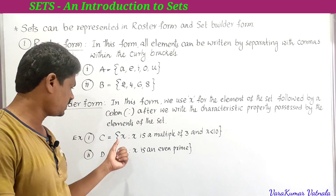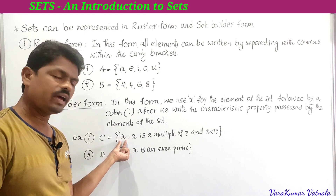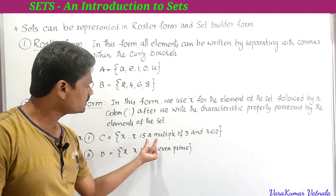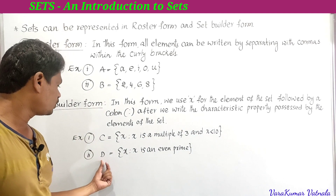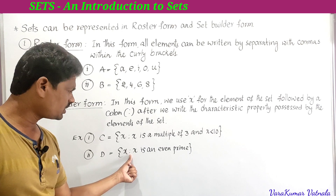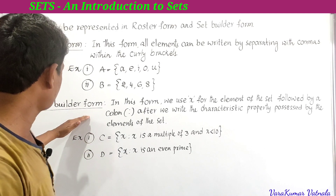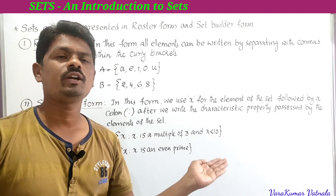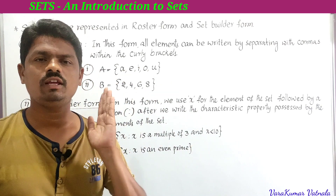We read set builder form as: 'set of all x such that...' For example: C = {x : x is a multiple of 3 and x < 10}. Another example: D = {x : x is an even prime}. This is the set builder form, and the corresponding roster form can be derived from it.